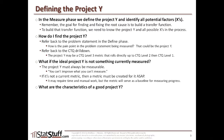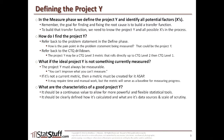What are the characteristics of a good project Y? It should ideally be a continuous value to allow for more powerful and flexible statistical tools for analysis, and so you can also measure variation. It should also be clearly defined how you calculate the project Y and what data sources you're using. If you're getting it from multiple reports or systems, make sure you're consistent and identify where you're getting that source, since different reports or systems may reflect the metric differently. Continue to use that one consistent source.